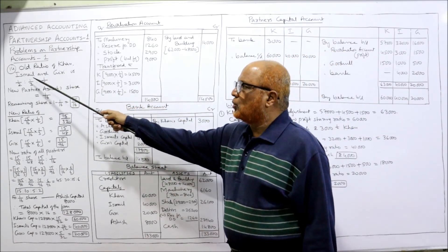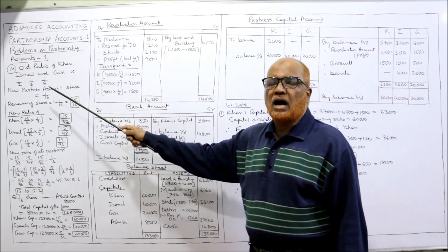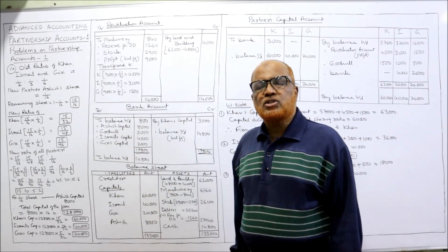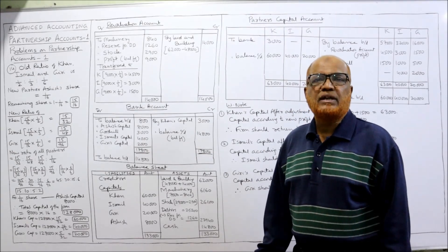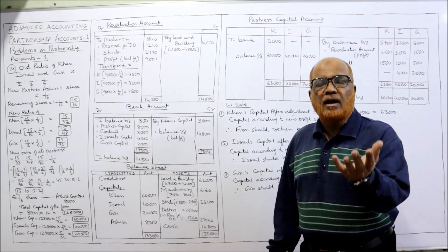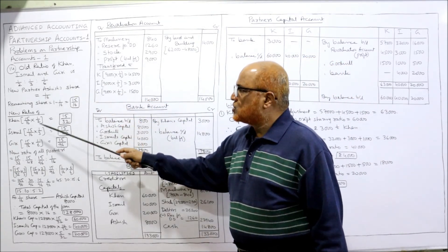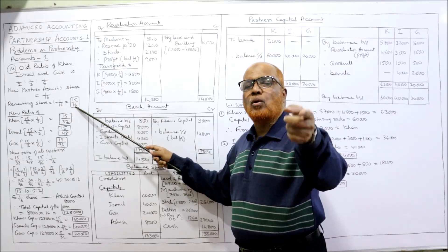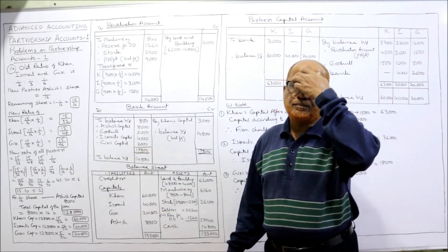The old ratio of Khan, Ismail, and Giri is 1/2, 1/3, 1/6 as given. The new partner Ashish's share is 1/16. The remaining share after giving him 1/16 is: 1 minus 1/16 = 15/16. This 15/16 will be shared by the old partners in the old ratio. So Khan's new share: 15/16 × 1/2 = 15/32.